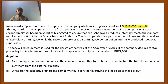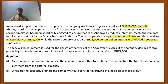Abubo Yar Limited has two supervisors. The first supervisor supervises the entire operations of the company, while the second supervisor has been specifically engaged to ensure that each Abubo Yar produced internally meets the standard requirements set out by the Ghana Transport Authority. The first supervisor is a permanent employee and receives a fixed salary of 2,000 Ghana cedis, while the second supervisor is paid 1,000 Ghana cedis per unit of an internally produced Abubo Yar supervised.